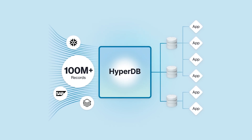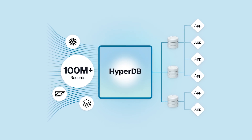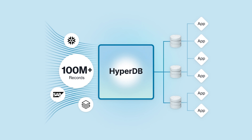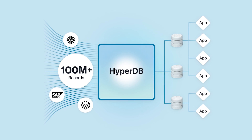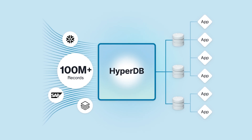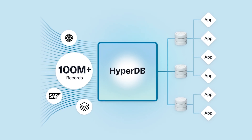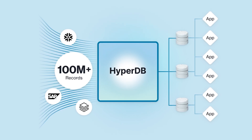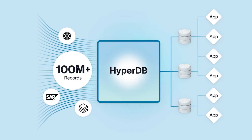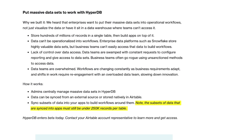Then, using HyperDB, you can sync these large datasets to your various Airtable bases. Essentially, HyperDB adds a new layer of data management on top of your bases. Each table and base will still have the same limitations as before — 250,000 records per table and 500,000 records per base on Enterprise.